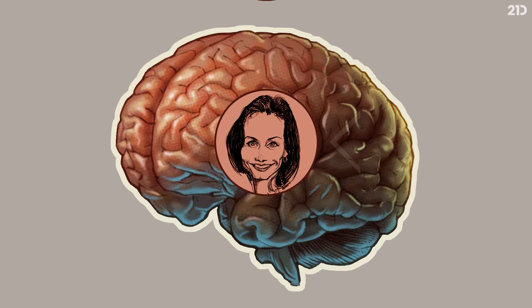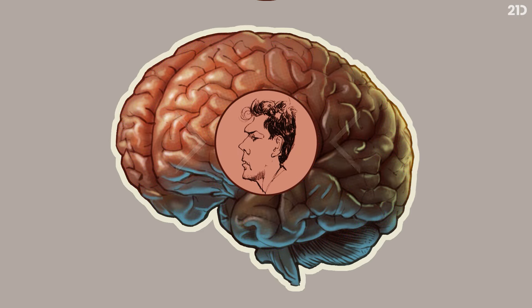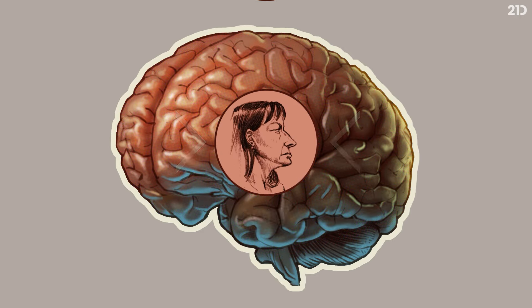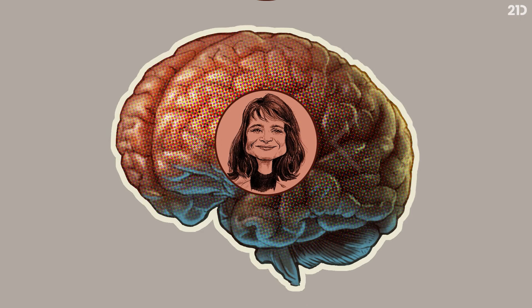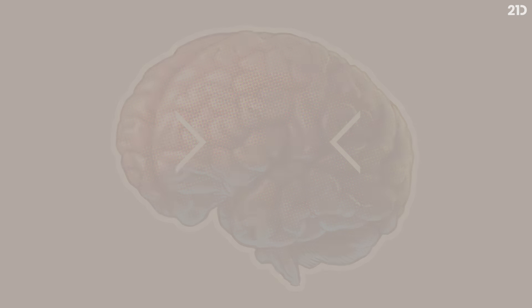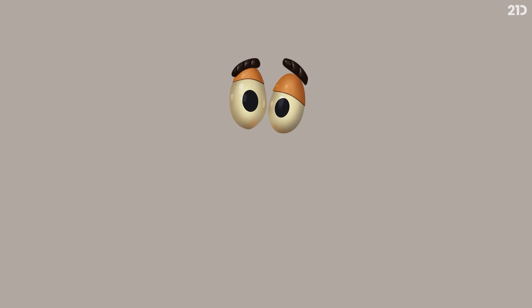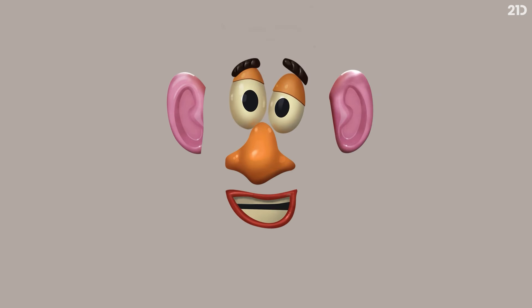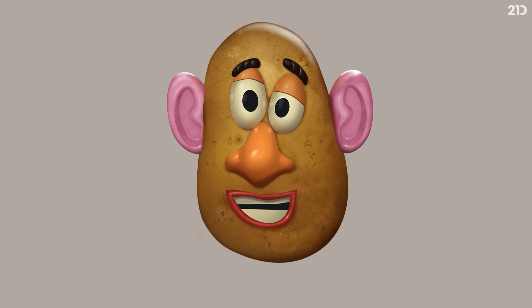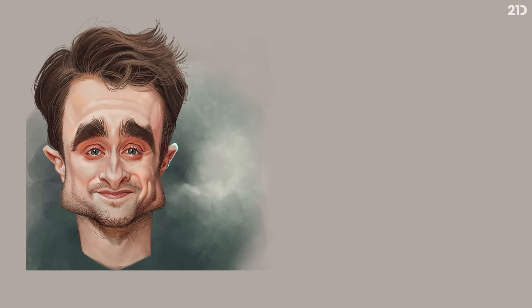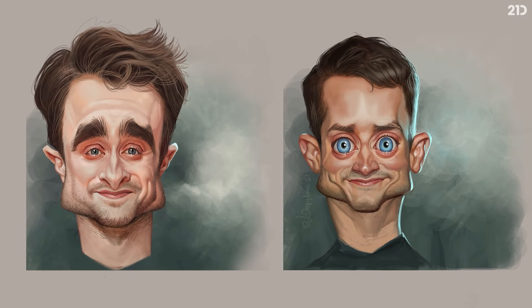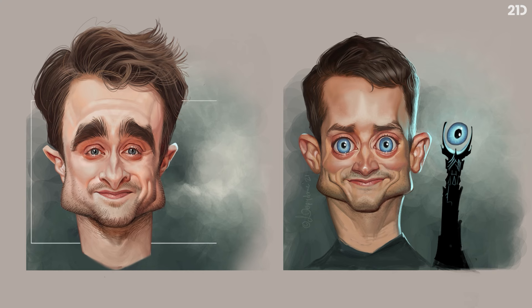These faces, barring an unfortunate combine harvester accident, are all basically built the same way — from two eyes, a nose, a mouth, ears, all on a simple oval shape. Yet, aside from some people mixing up Daniel Radcliffe and Elijah Wood, we are remarkably good at telling them all apart.